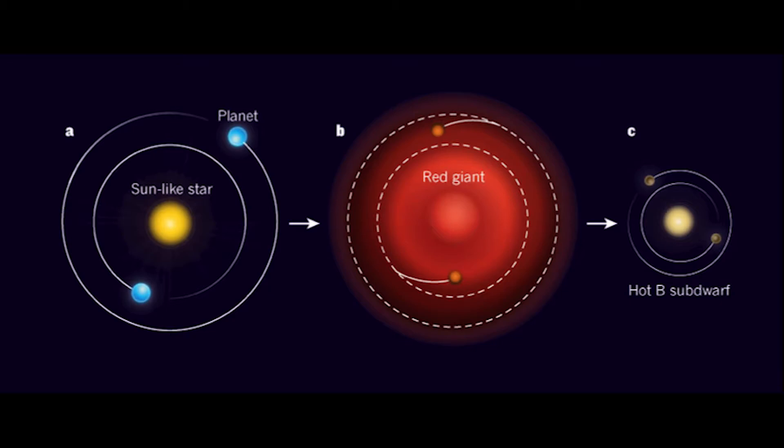After being super big during the red giant phase for a little while, stars shrink and become smaller again, which is exactly what Kepler 70 did.